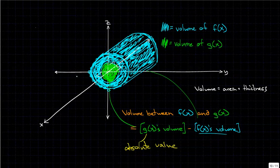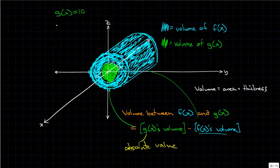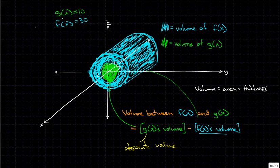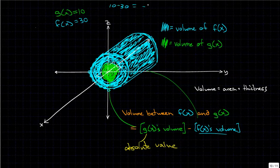We take the absolute value of that. So we could say, let's say, g of x equals 10, and f of x equals 30, and these are in cubic units. Then we would go 10 minus 30, which equals negative 20. We take the absolute value of that, and we would get 20. So our volume between f of x and g of x, in this case, would be 20.